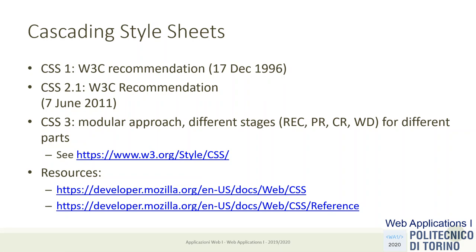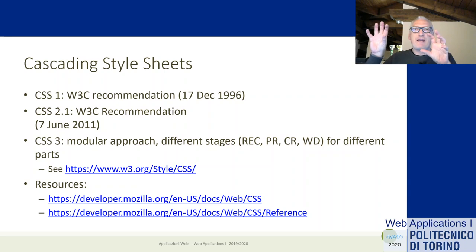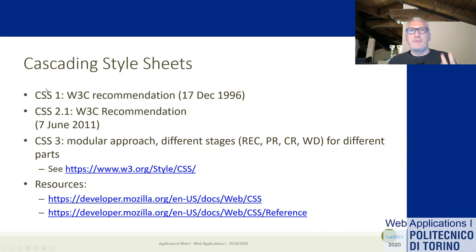So CSS is more than 25 years old, and the real popularity started with XHTML or HTML4 around 10 years ago. CSS 2.1 really gained enough power to be useful in actually substituting older practices in developing websites. In older times, for aligning elements on a web page, we were using tables or frames - some very old technology that is not used anymore, because it was the only way. Then CSS from version 2.1 started to have enough primitives to really lay out complex pages without any strange quirks or bad practices at the HTML level. And right now we are in the epoch of CSS3.